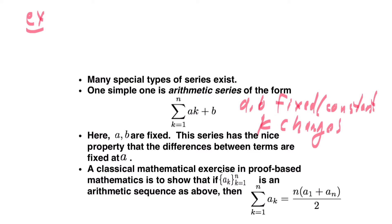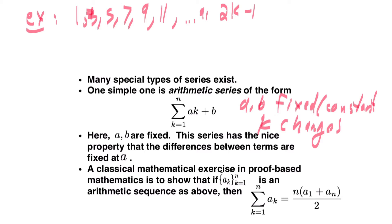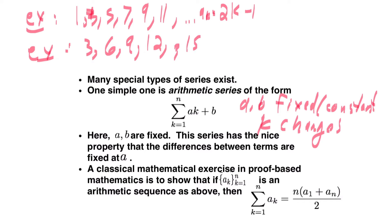As an example, we can look at 1, 3, 5, 7, 9, 11. This is an arithmetic sequence, and I can write it as 2k minus 1. If I plug in k equals 1, I get 1; k equals 2 gives me 3; k equals 3 gives me 5, and so on. Another example would be 3, 6, 9, 12, 15 — in this case, a·k is just 3 times k.